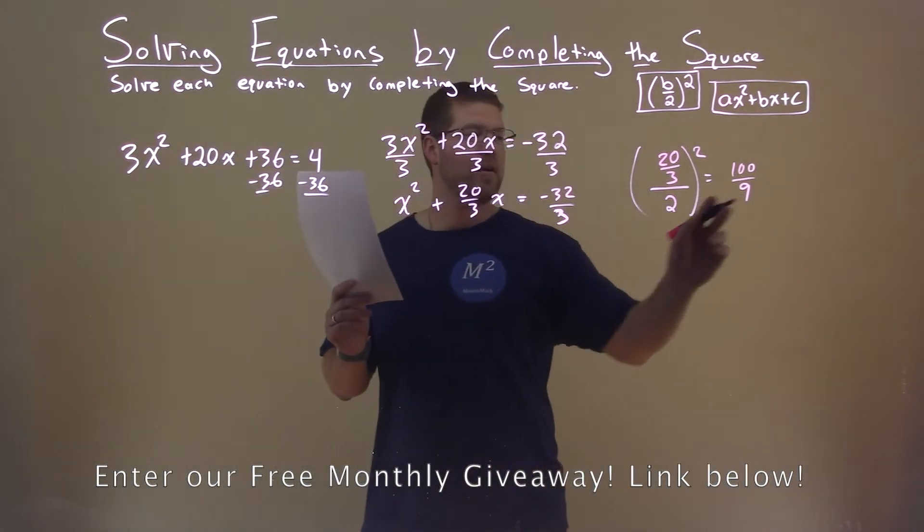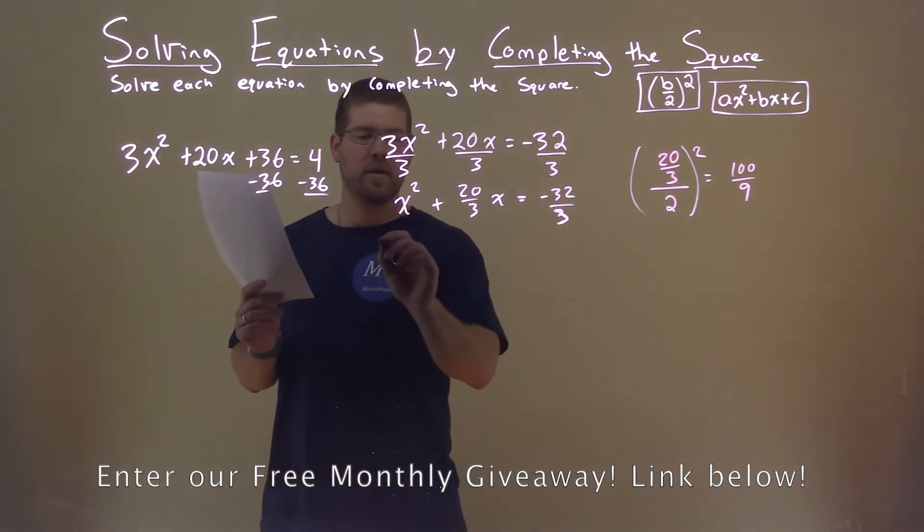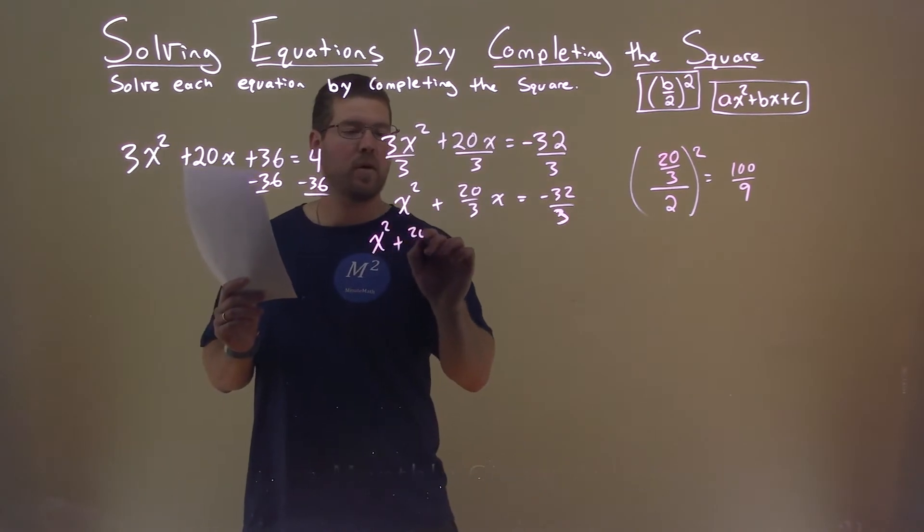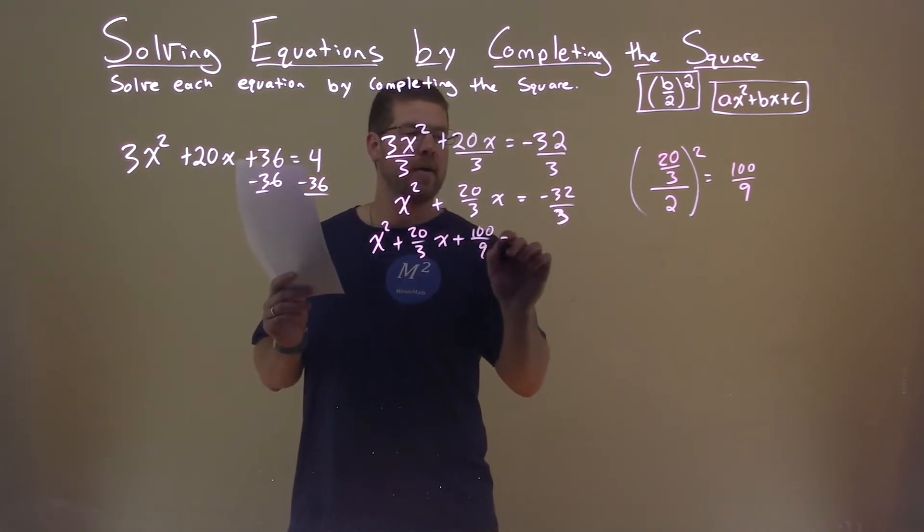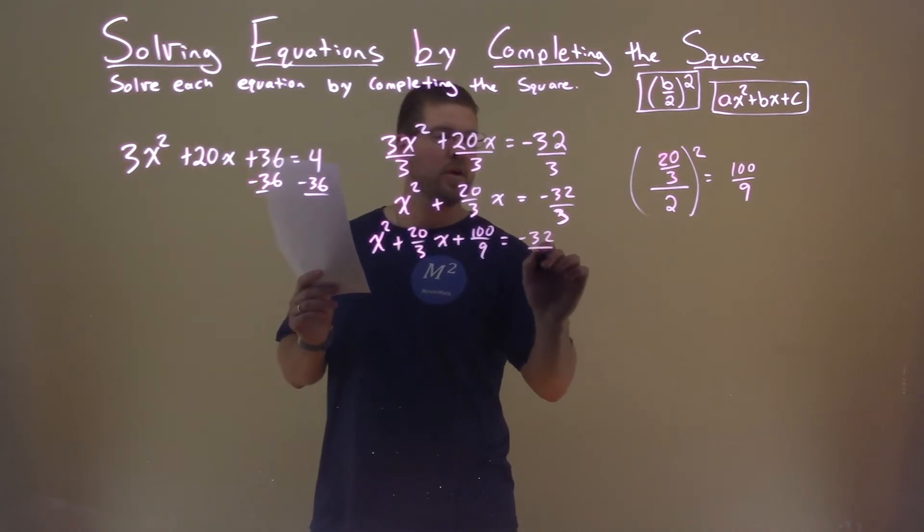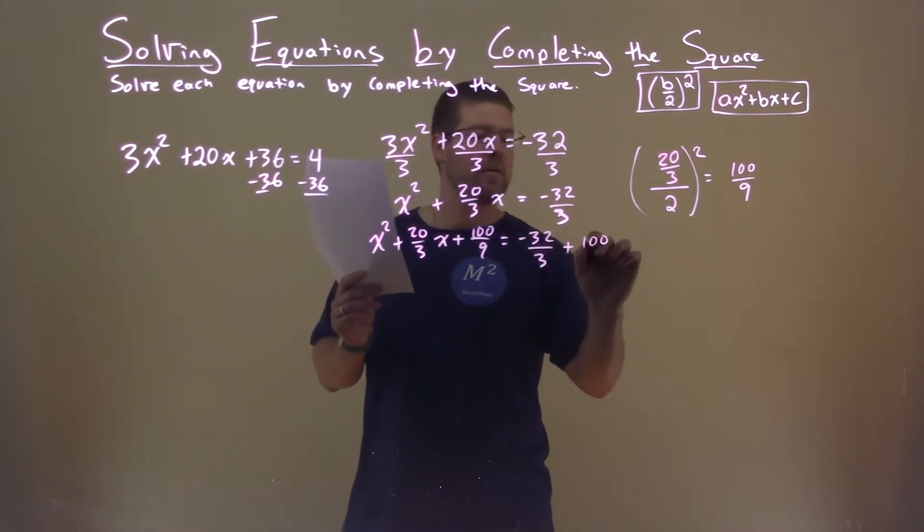We're going to add that 100 over 9 to both sides of the equation. So we have x squared plus 20 over 3x plus 100 over 9 equals negative 32 over 3 plus 100 over 9.